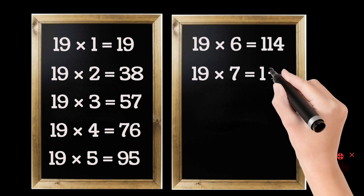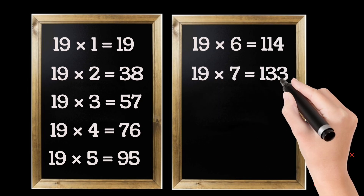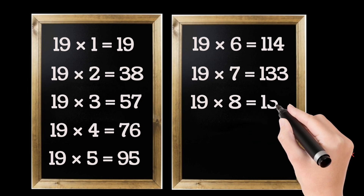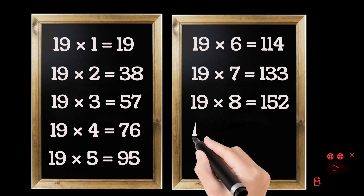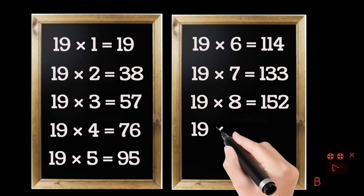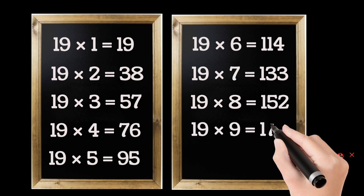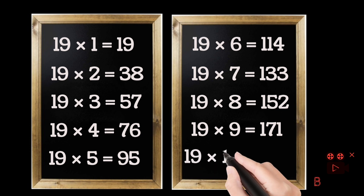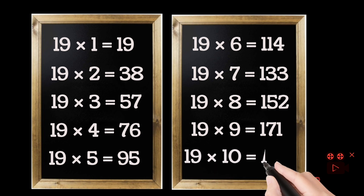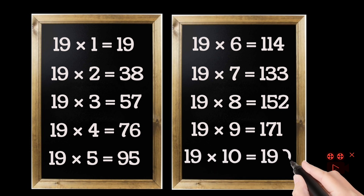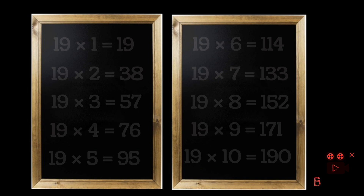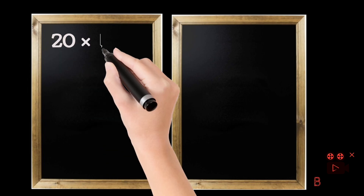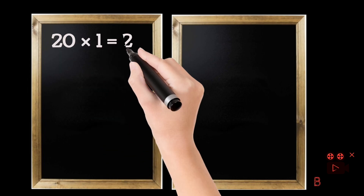19 sevens are 133. 19 eights are 152. 19 nines are 171. 19 tens are 190. 20 ones are 20.